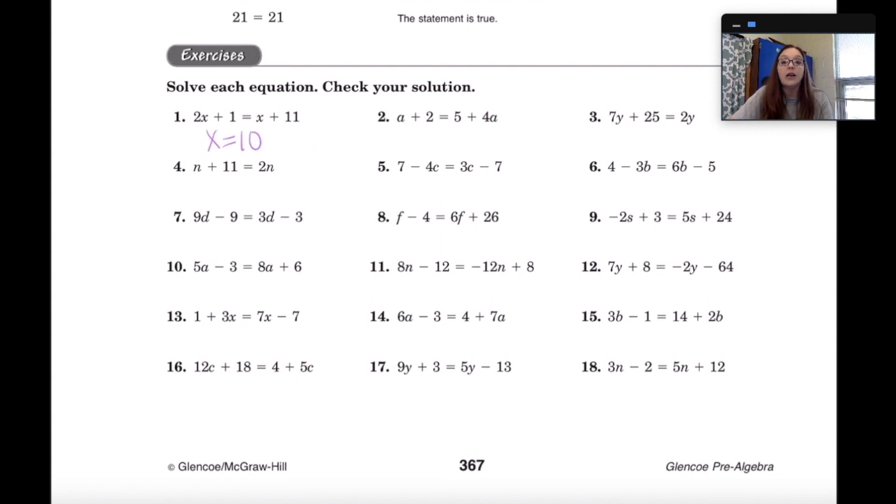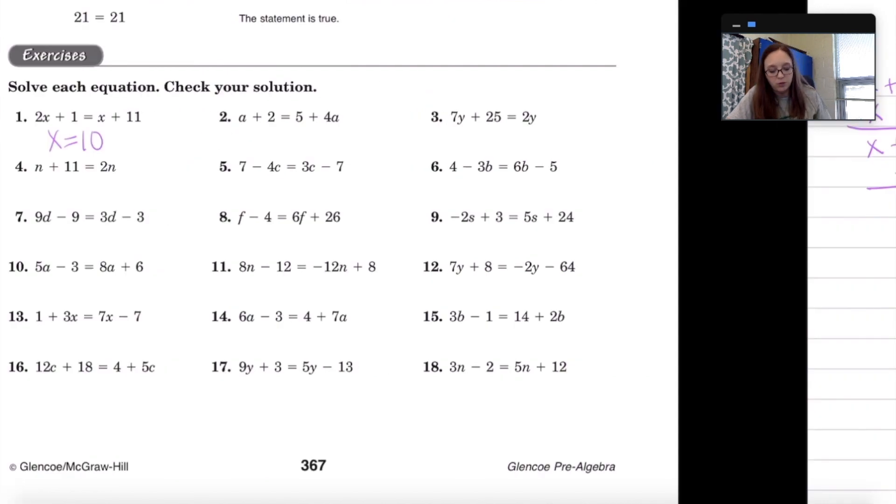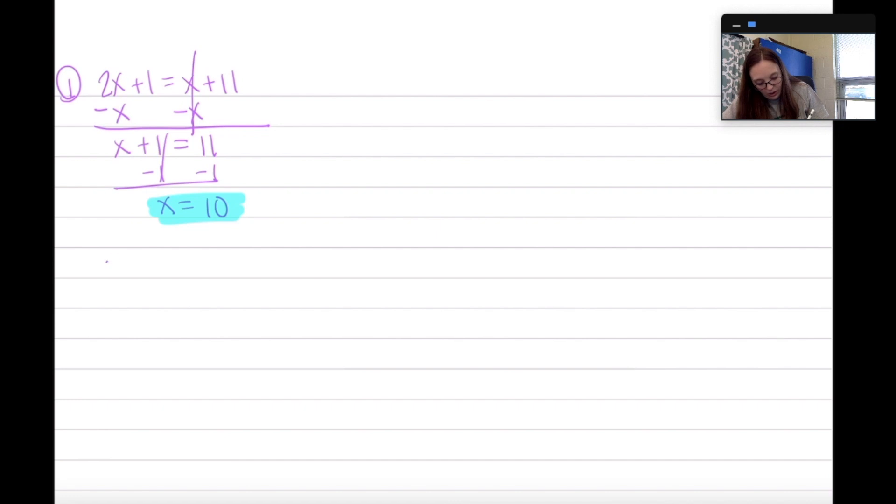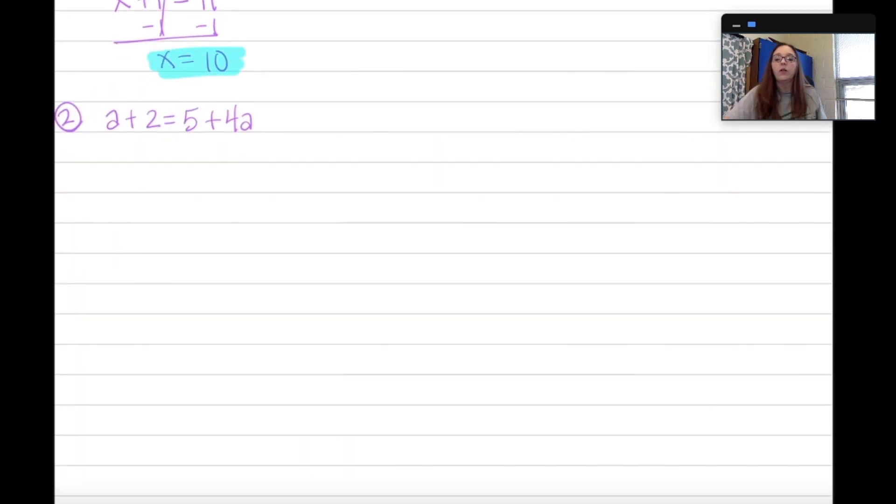Let's try problem 2. That's A plus 2 equals 5 plus 4A. Again, I'm going to start off. I'm going to look. Do I have like terms on the left side that can be combined? No. How about on the right side? Are there like terms there that can be combined? No.